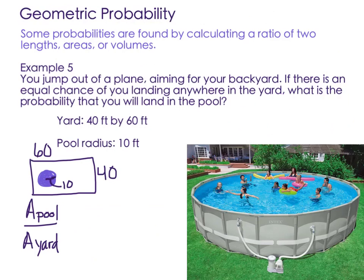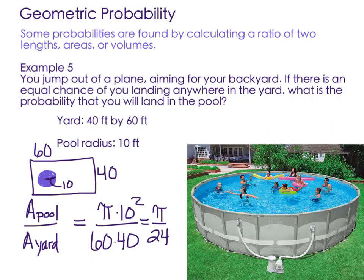And I know you guys are saying, but there's not the same chance. It depends on where the plane is. Well, let's just say we don't know where the plane is. So just, you know, go with it. It's equal chance of landing anywhere in the yard. So the area of the pool is going to be pi r squared. Pi times 10 squared. The area of the yard will be 60 by 40. And when you reduce that, you get pi over 24. But nobody says, oh, the probability is pi over 24. At least, I hope they don't. So that's about 13.090%. Not that great. You'd probably land in the yard and break your neck instead. So don't jump out of a plane aiming for a pool.